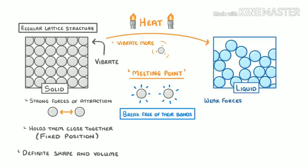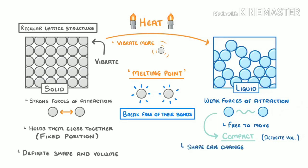In liquids, there are only weak forces of attraction between the particles, so they're free to move around, and are arranged pretty randomly. However, the weak forces of attraction do mean that the particles tend to stick together, and are fairly compact. This means that they have a definite volume, even though their overall shape can change, allowing them to flow to fit a particular container.